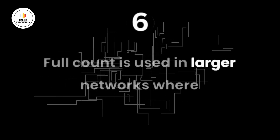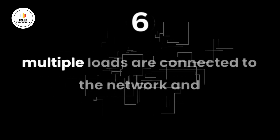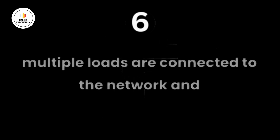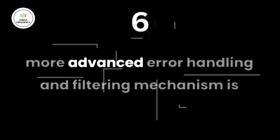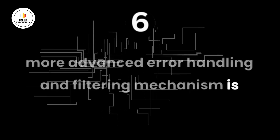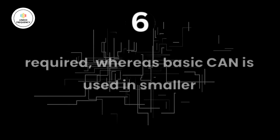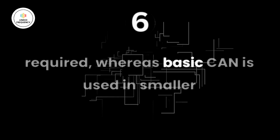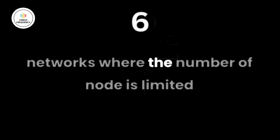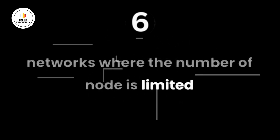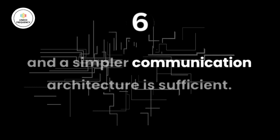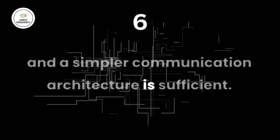The sixth difference: full CAN is used in larger networks where multiple nodes are connected and more advanced error handling and filtering mechanisms are required. Whereas basic CAN is used in smaller networks where the number of nodes is limited and a simpler communication architecture is sufficient.